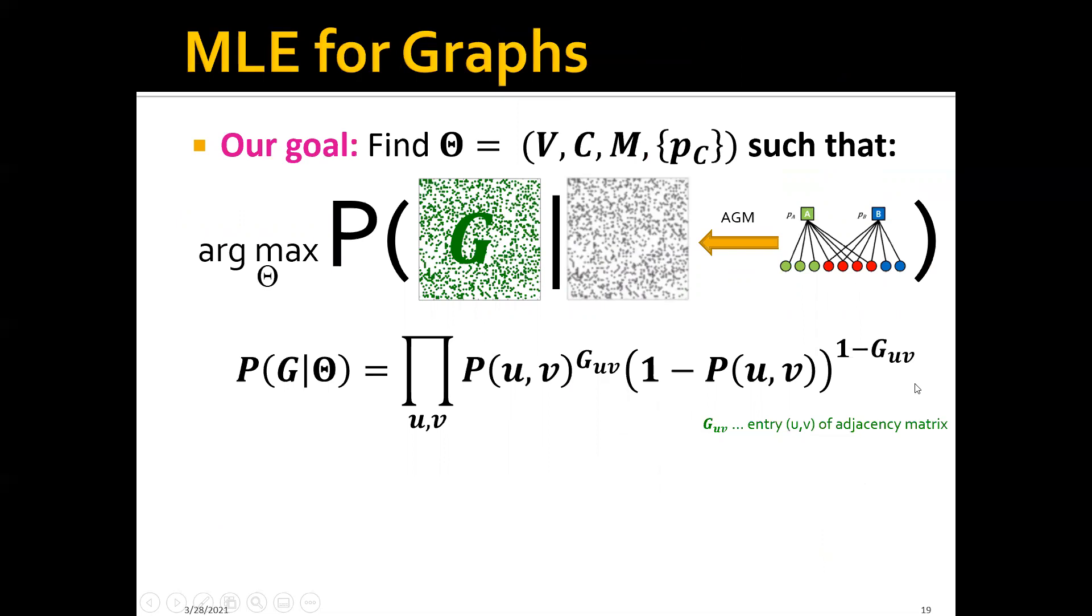So basically our goal is to find the optimal θ, which consists of four subsets of parameters, such that the likelihood can be maximized.